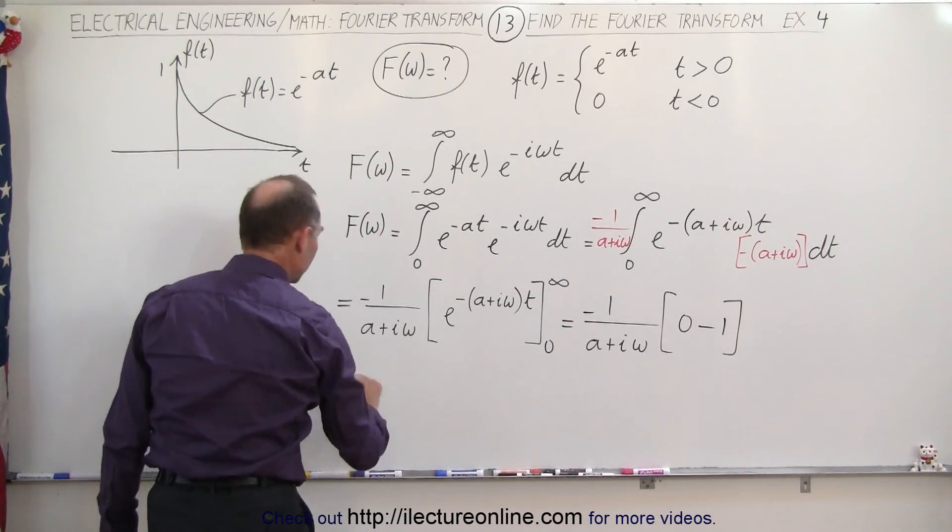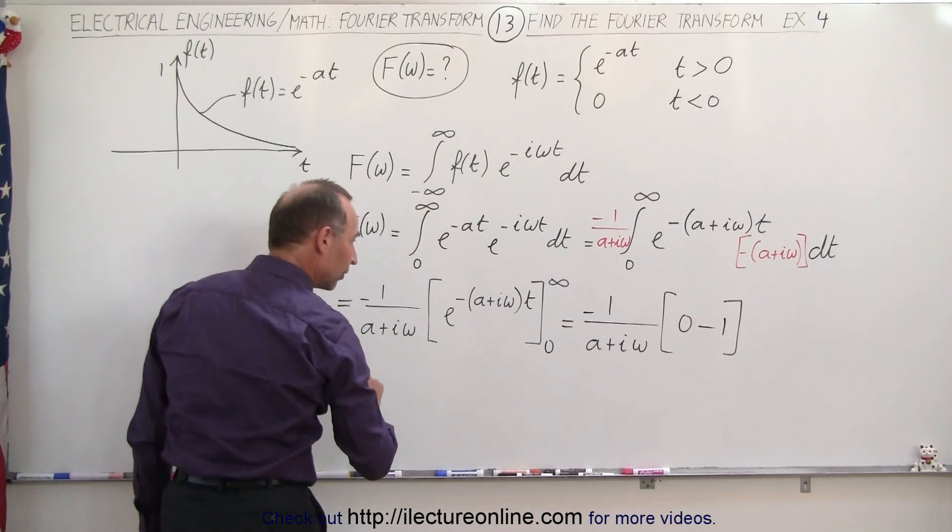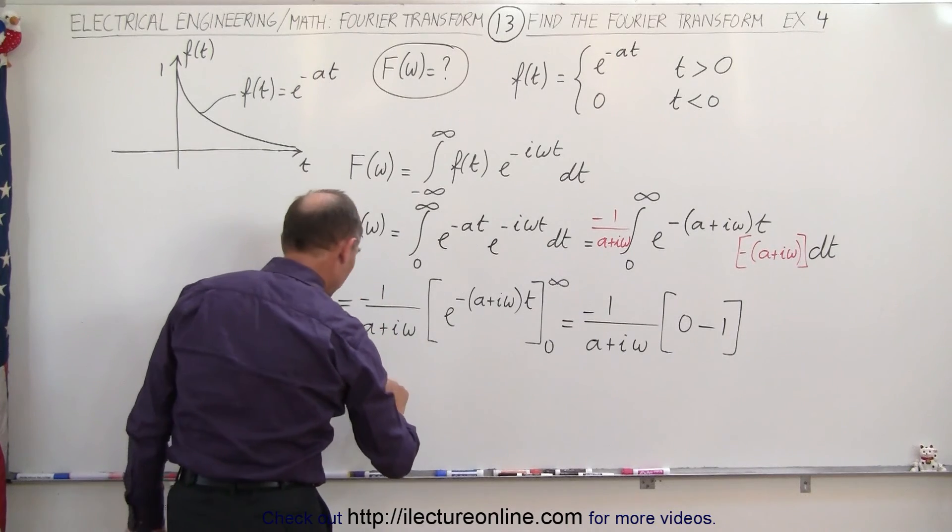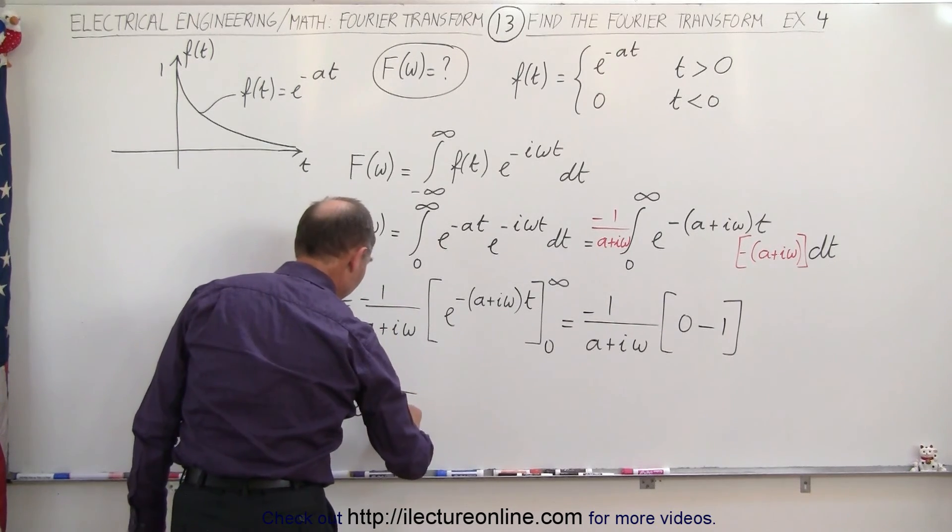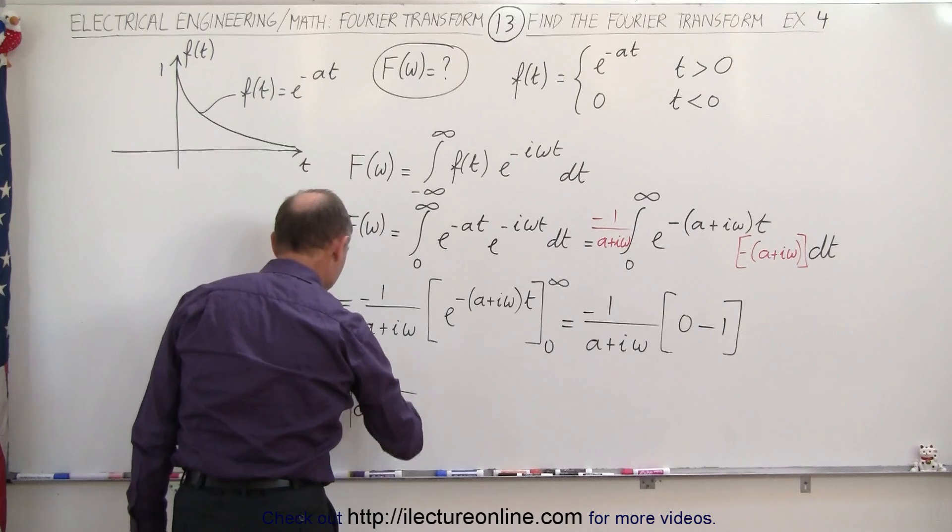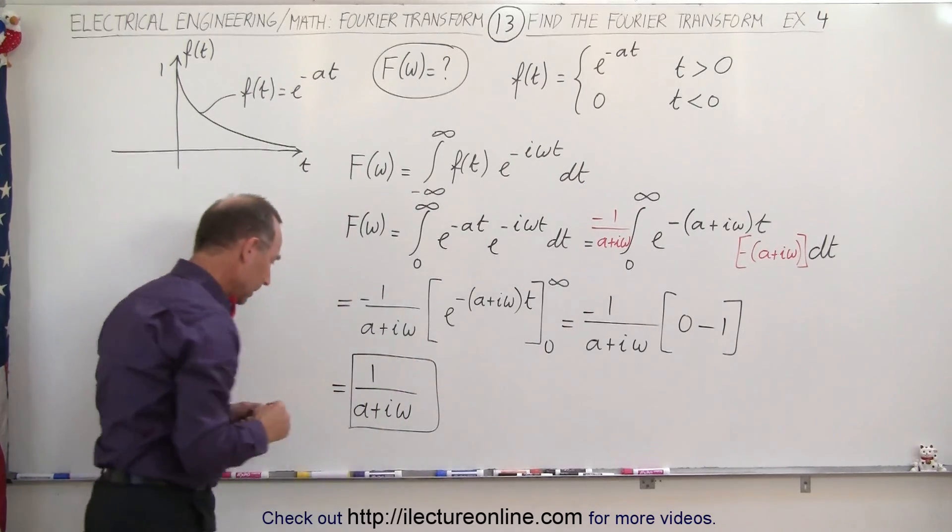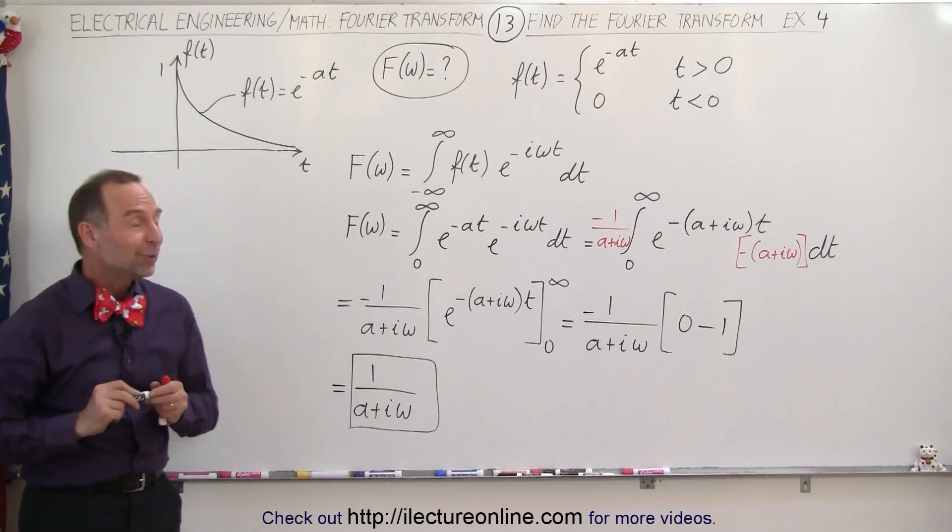So that means that the Fourier transform of this impulse function, or this input, would be equal to 1 over a plus i omega. And that's how we do that.